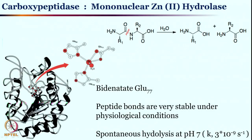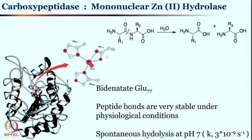Such a seemingly difficult reaction is rather easy for an enzyme to cleave. Carboxypeptidase is a zinc enzyme with 2 histidine and 1 glutamate. Quite interestingly, this is not a monodentate carboxylic acid binding to the metal — it is a bidentate glutamate binding. Carboxylic acid residues like aspartate and glutamate can act as monodentate or bidentate ligands, and this switch in denticity can open up a coordination site for substrate binding.